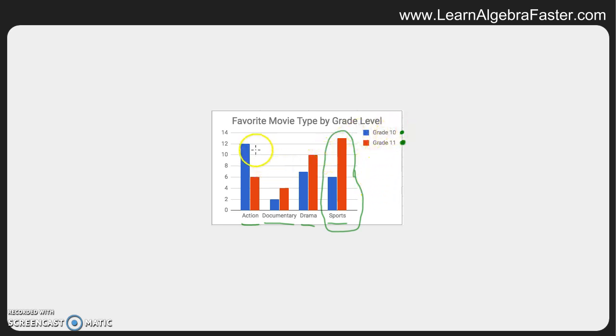This bar graph shows that grade 10 students' favorite is the action movie, where 12 students like the action movie. The favorite movie for grade 11 is sports movies, and 13 students like that. This is just one example of a bar graph to show you how cool they are, how easy they are to read. You can look right away and discuss lots of different things about this bar graph.